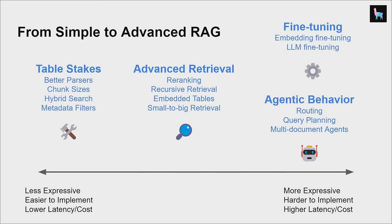There are also advanced retrieval methods you could try — a little more advanced, some pulling from traditional IR and some new in this age of LLM-based apps. There's re-ranking, which is a traditional concept. There are also concepts in LlamaIndex like recursive retrieval, dealing with embedded tables, small-to-big retrieval, and a lot of other things that can help improve the performance of your application.